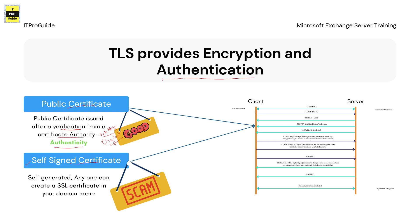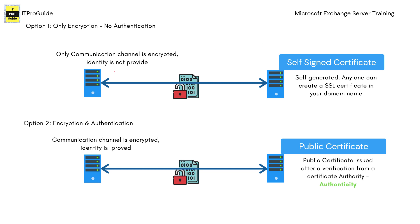The other type of certificate is the self-signed certificate. When we set up our Exchange Server, we got a self-signed certificate — it is a machine-generated certificate, not verified by anyone. You can also create a self-signed certificate from your command prompt. As it is not verified by any certificate authority, it is not considered a good certificate for communication. You need a public certificate to prove your authenticity.